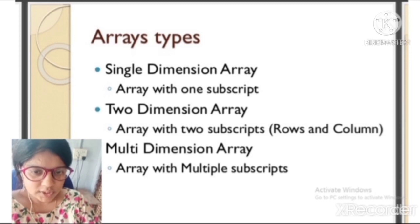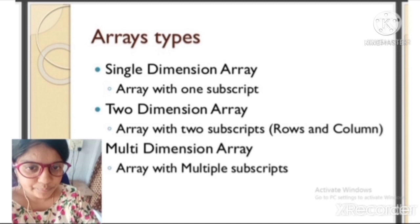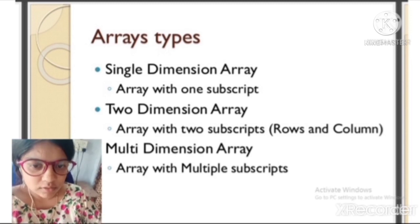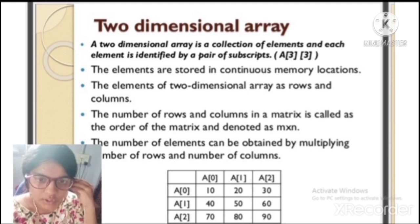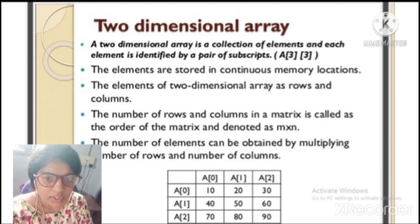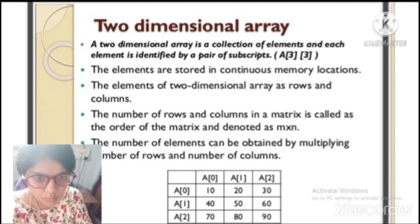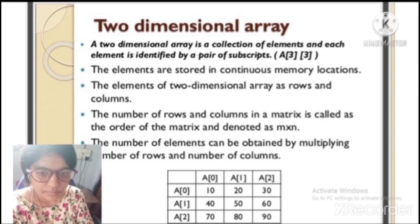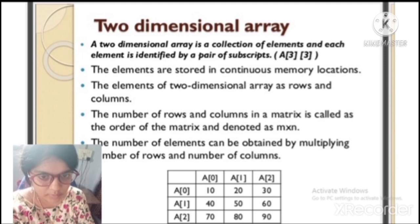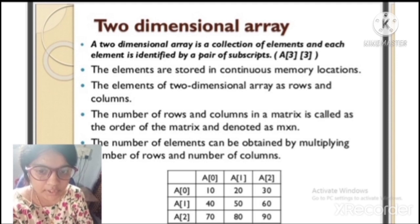Summary of array types: a single-dimensional (one-dimensional) array has one subscript; a two-dimensional array has two subscripts — rows and columns; and a multi-dimensional array has multiple subscripts. A two-dimensional array is a collection of elements identified by a pair of subscripts, stored in continuous memory locations with rows and columns. The number of rows and columns in a matrix is called the order of the matrix, denoted as m×n, and the total number of elements is obtained by multiplying the number of rows and columns.